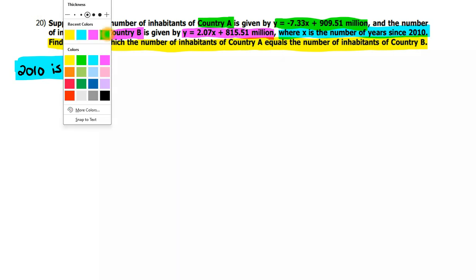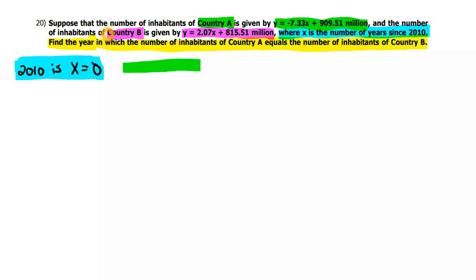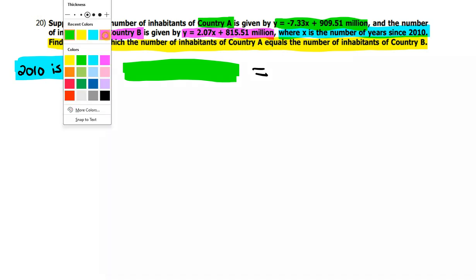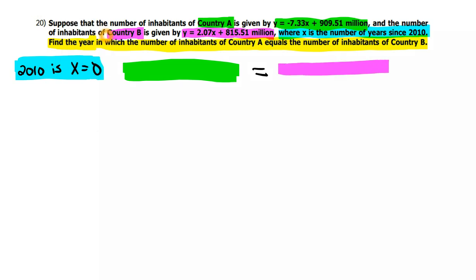Okay, so we're looking for where the number of inhabitants of Country A equals the number of inhabitants of Country B. That's what that last thing says. Find the year in which the number of inhabitants of Country A, which I highlighted in green, equals the number of inhabitants of Country B, which I highlighted in pink.